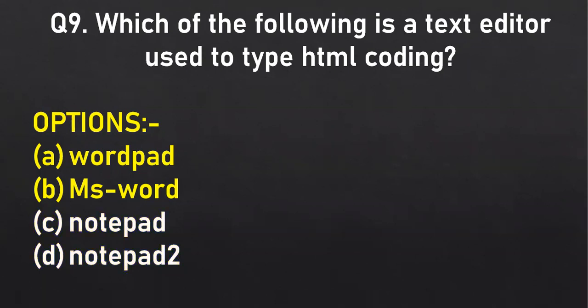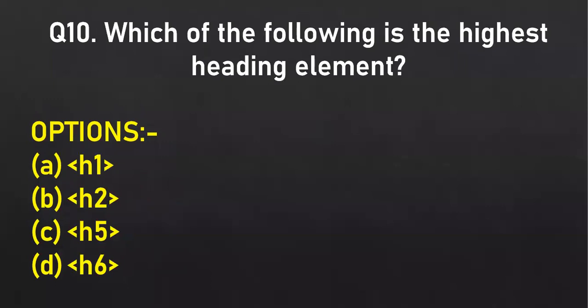From this level, try to read options carefully — some confusion will definitely be created in your mind. Which of the following is the highest heading element? Whenever I say highest, I mean from the point of view of how the text gets displayed. Khushi's answer: A option, H1 — very straightforward. Correct, A option H1.